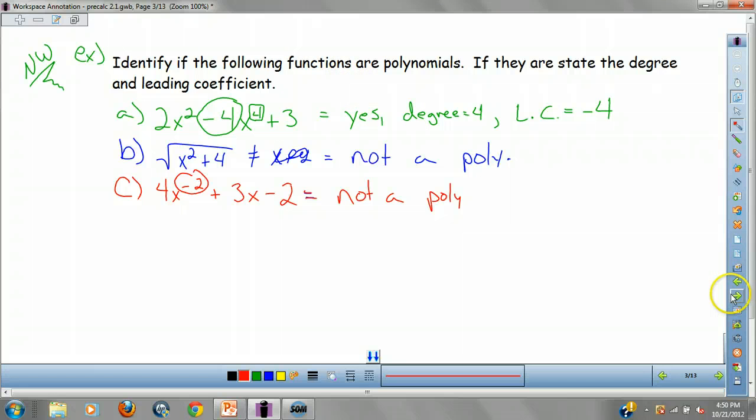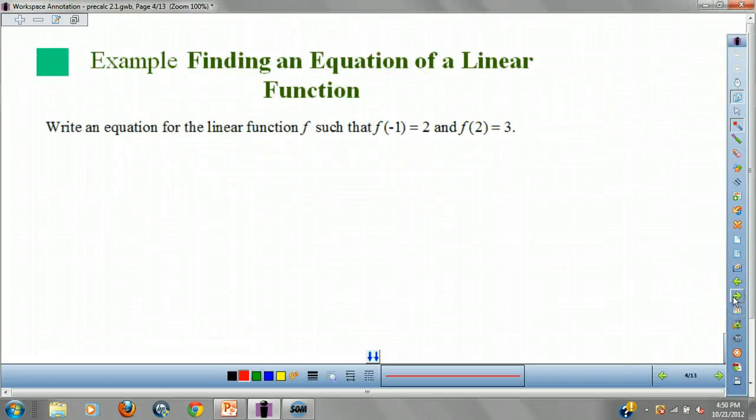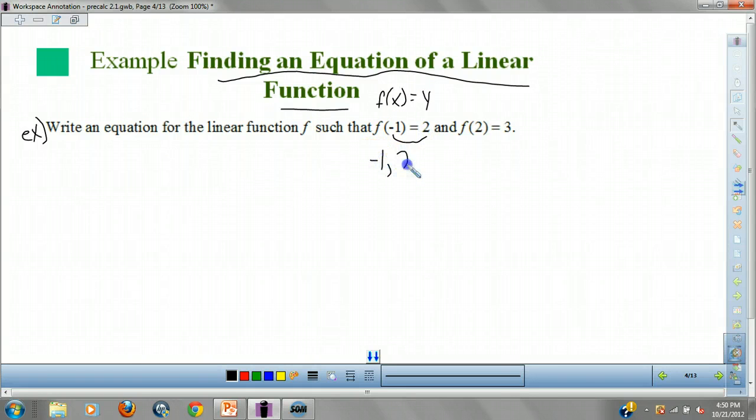This example is pretty straightforward, guys. Finding an equation of a linear function. Here's your example. Write the equation for the linear function f such that f of negative one equals two and f of two equals three. Now, remember, your function's f of x equals your y. So, this really gives us coordinates, right? This gives me the coordinate negative one, two. And this one gives me the coordinate two, three.